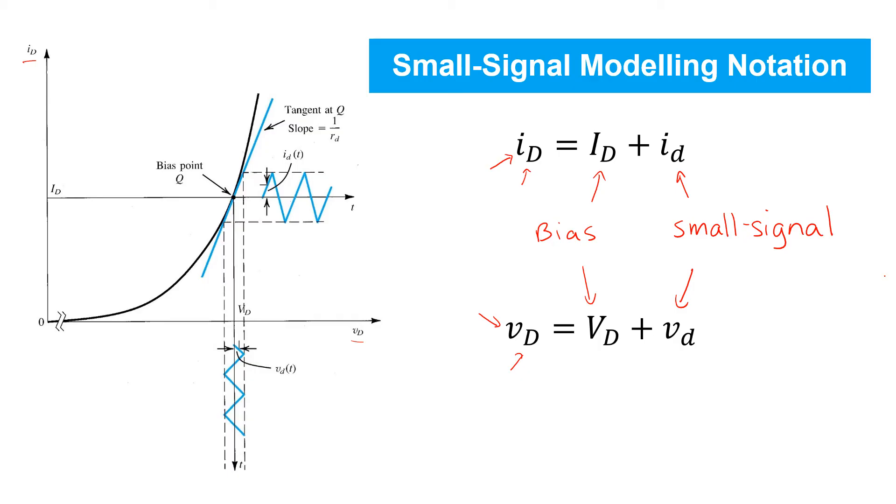So in general, the total value is the superposition of these two. These all lowercase symbols for the small signals are in effect replacing the incremental quantities that we defined earlier: delta VD, delta ID, and so on. Going forward, we'll start using the lowercase notation more and more.